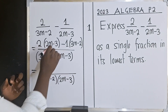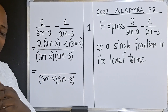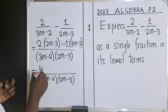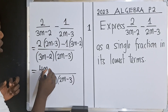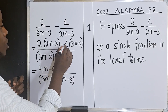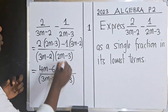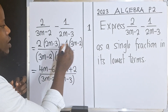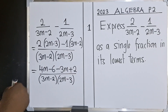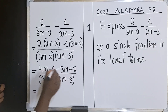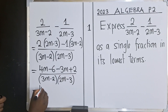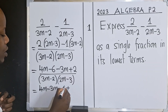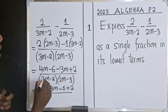So now we get rid of the brackets — order of operations, or BODMAS. So we're going to say 2 times 2m, that is 4m. 2 times negative 3, that is negative 6. Negative 1 times 3m, that is minus 3m. Negative 1 times negative 2, that is positive 2, because negative and negative will definitely give us a positive. So now from this stage we can work out. We group the like terms — we have 4m minus 3m, minus 6 plus 2, over the denominator.